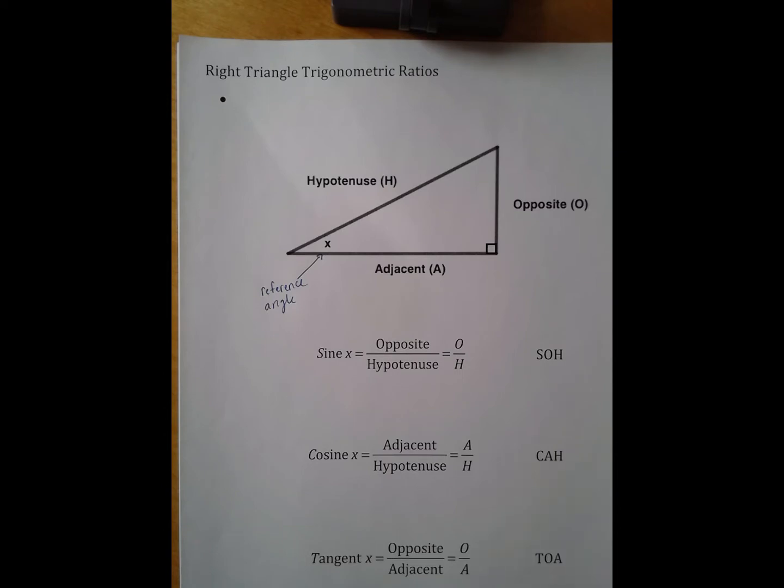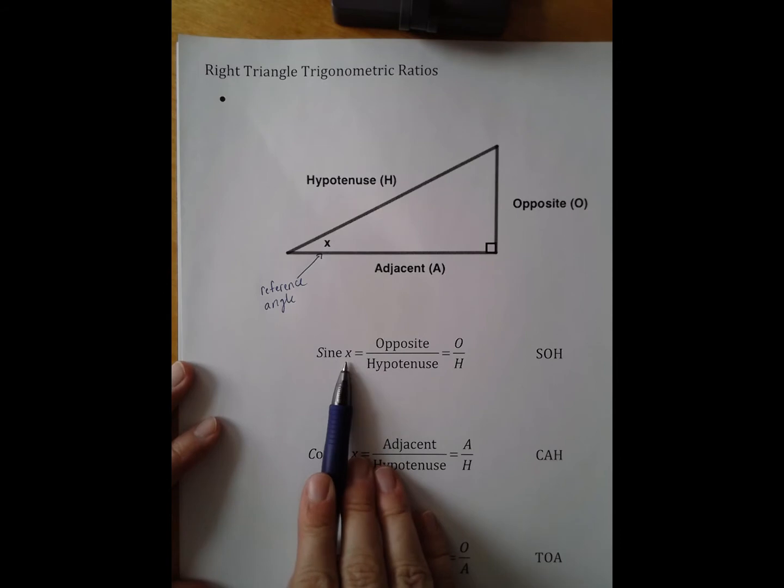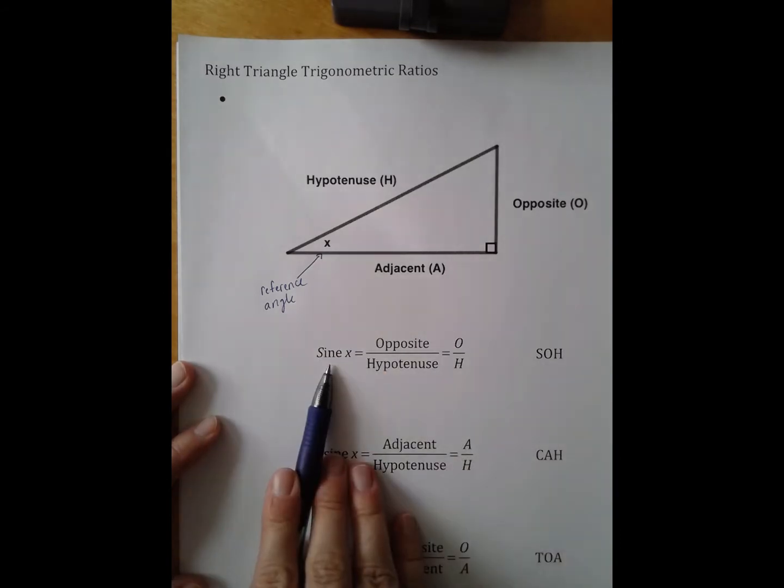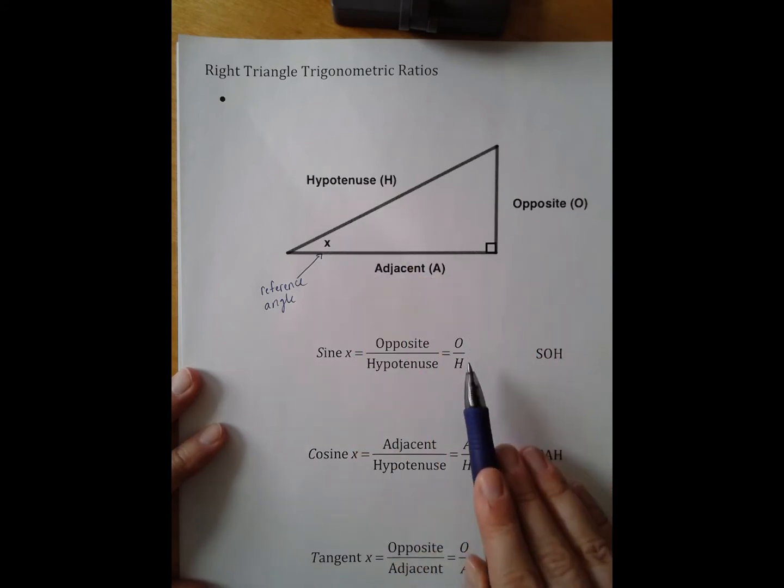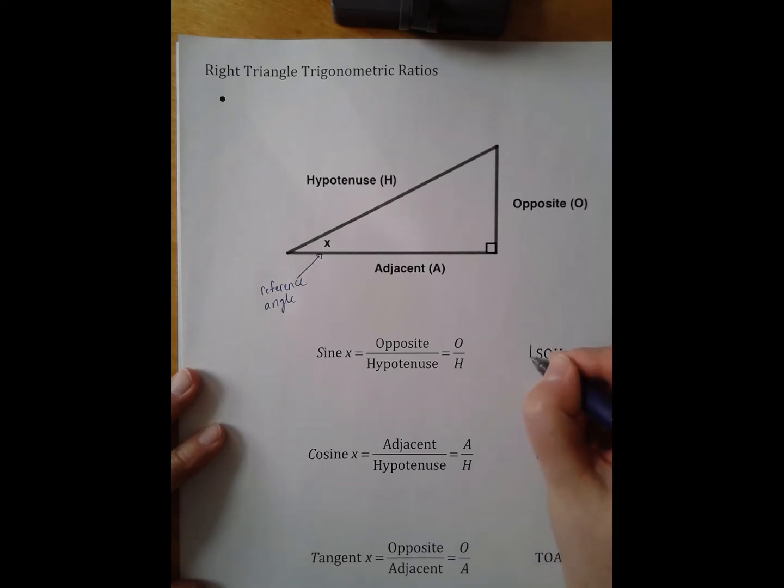So they decided that sine of the reference angle X is always going to be the ratio of the opposite side over the hypotenuse, O over H. And we often shorten that to be SOH.